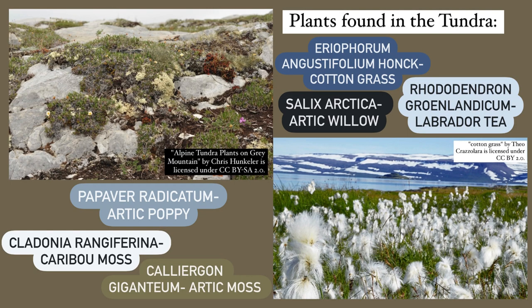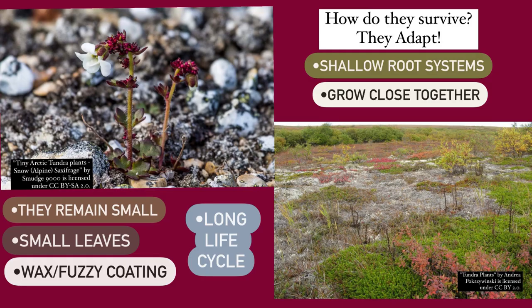The word tundra means treeless, so most of the plants you find in the tundra grow close to the ground. Cotton grass, labrador tea, arctic willow, caribou moss, arctic poppy, and arctic moss are all a part of the tundra biome. These plants all have specific adaptations to be able to survive the brutal weather of the tundra.